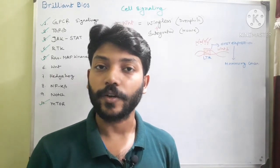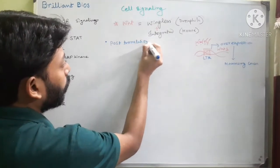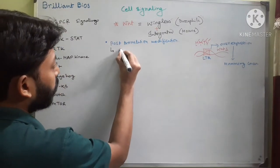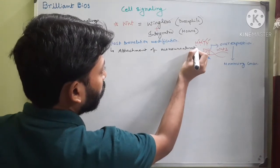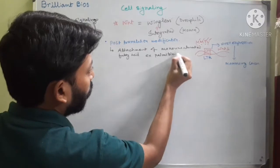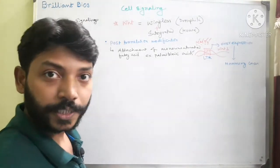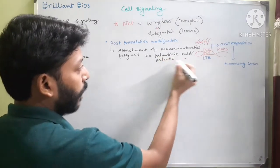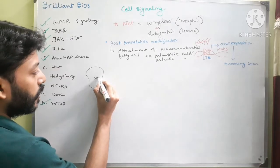Another important fact about Wnt protein is that this protein goes through a post-translational modification, which is the addition of mono-unsaturated fatty acids. The modification is the attachment of a mono-unsaturated fatty acid, for example palmitoleic acid. In the molecular biology book of Lodish, only palmitoleic acid is mentioned, but in the book of Gilbert's Developmental Biology, palmitic acid is also mentioned. Both fatty acids are mentioned, so I'm mentioning both here. The serine amino acid in the Wnt protein is attached with these fatty acids.